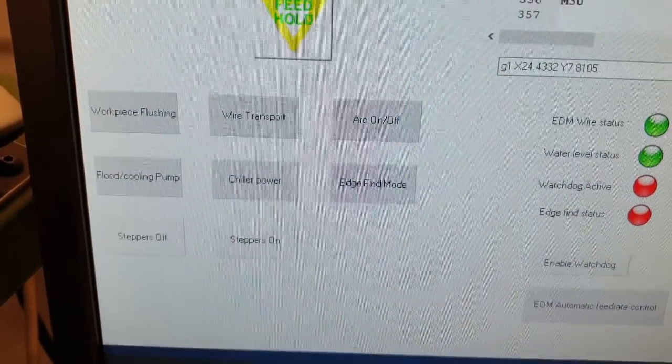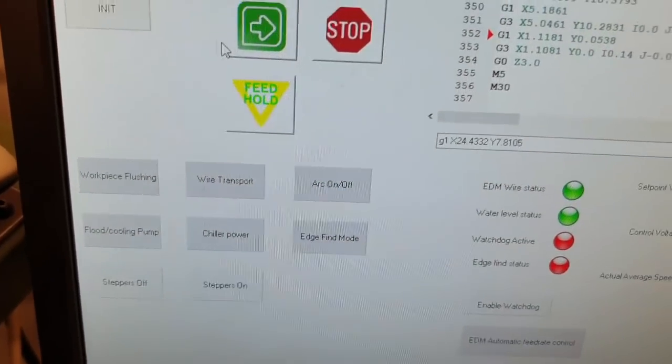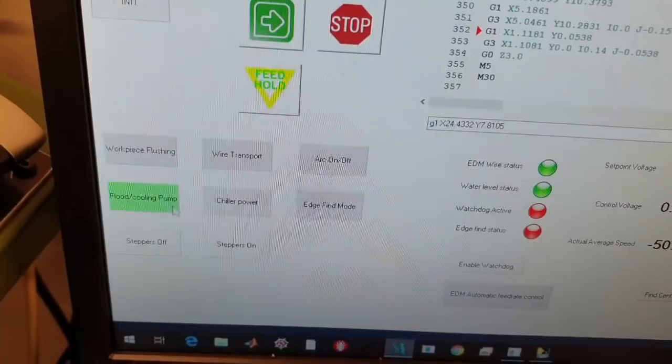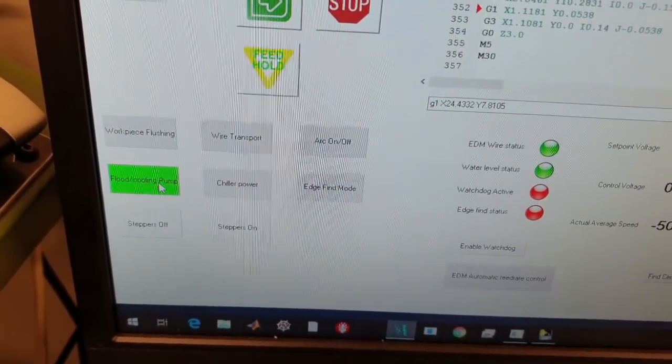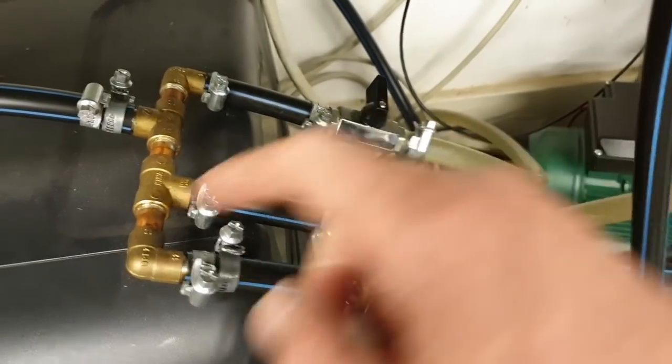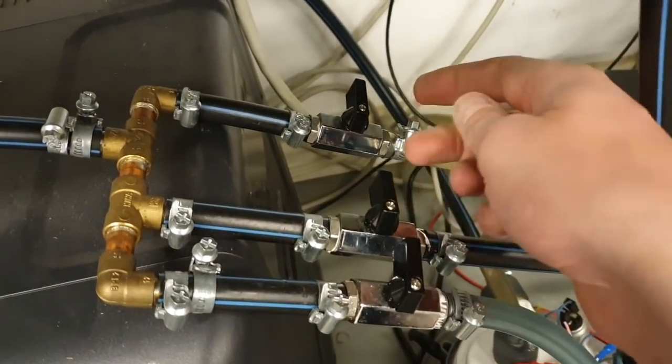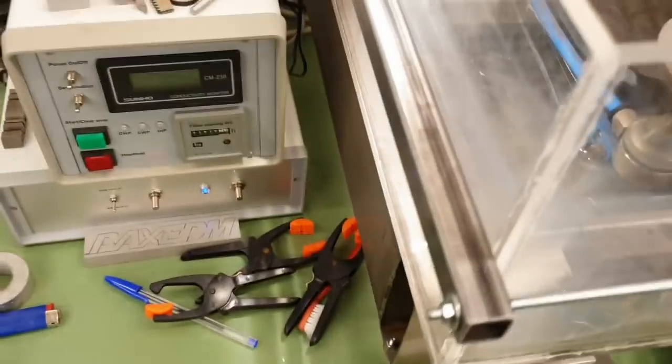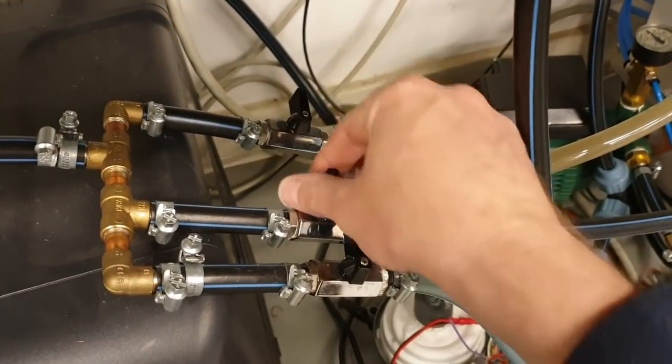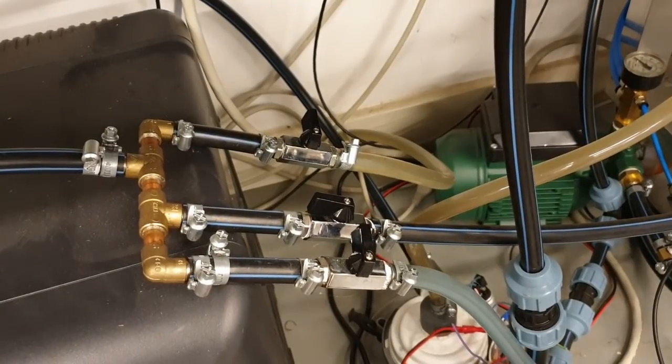Now I can turn on my water. So here's my DynaMotion interface. I have several buttons here for workpiece flushing, wire transport, turning the arc on and off, and flood and cooling pump. When I press this one now, my flood and cooling pump goes on. And I have a few valves here that regulate the flow. At the moment it's set to circulate through my cooling pump. Now I can reroute the circulation to fill the tank. I'm filling my tank. And when the tank is full, I reroute the circulation to the cooler again.